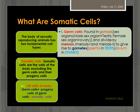Now, what are somatic cells? Very simply we can understand like this. If you take out the germ cells and their progeny cells from the body of an animal, the remaining cells present in the body are called the somatic cells. The progeny cells of the germ cells means the cells which are produced from the germ cells.